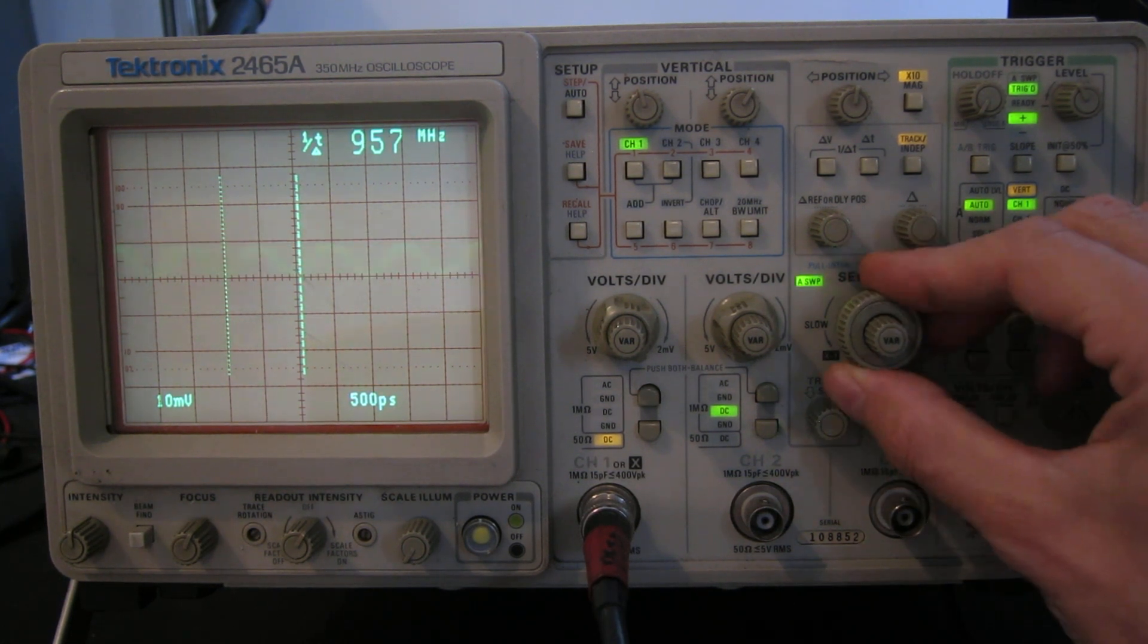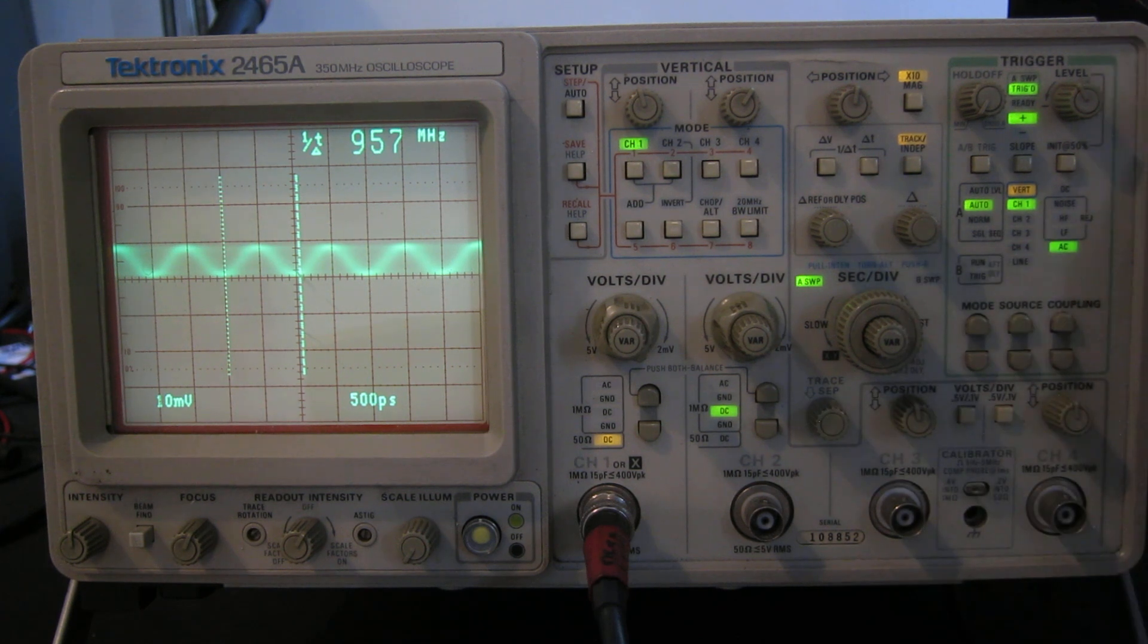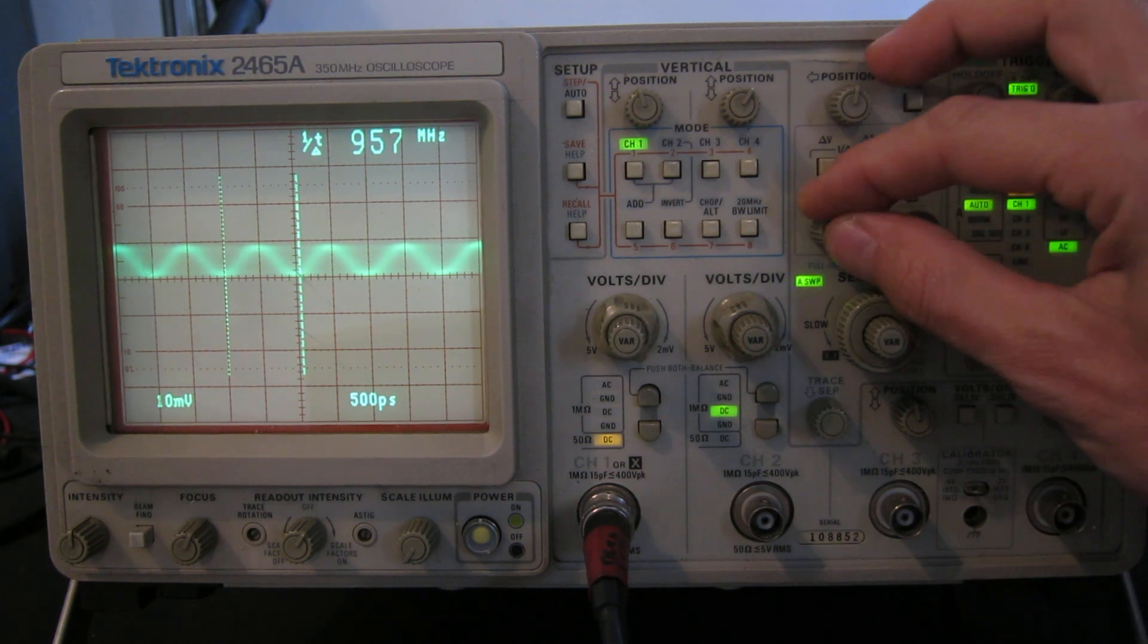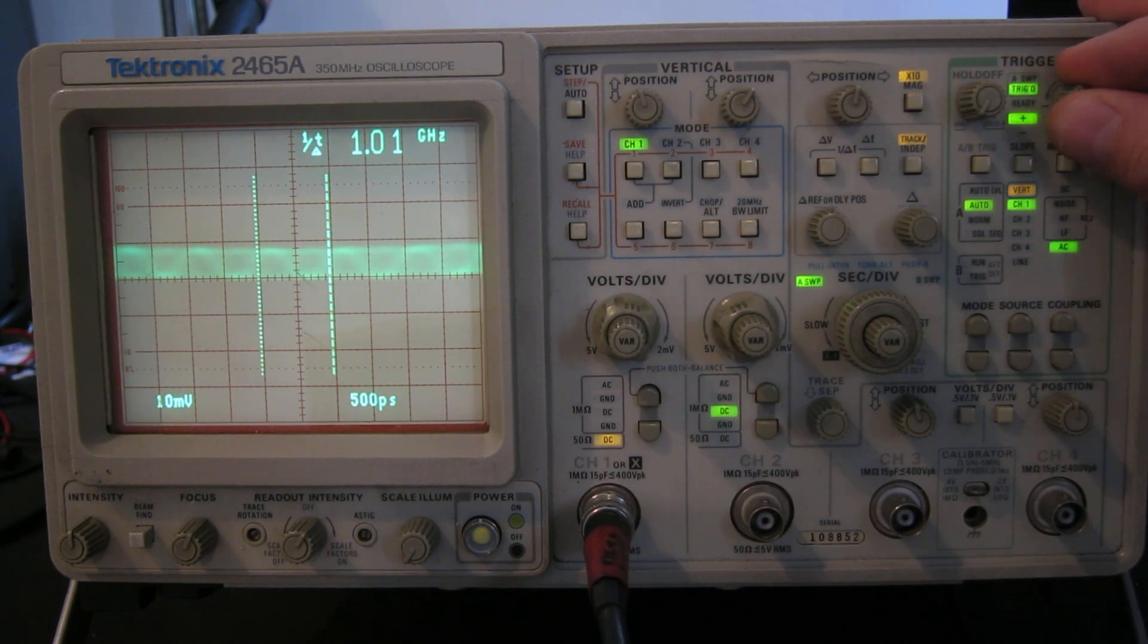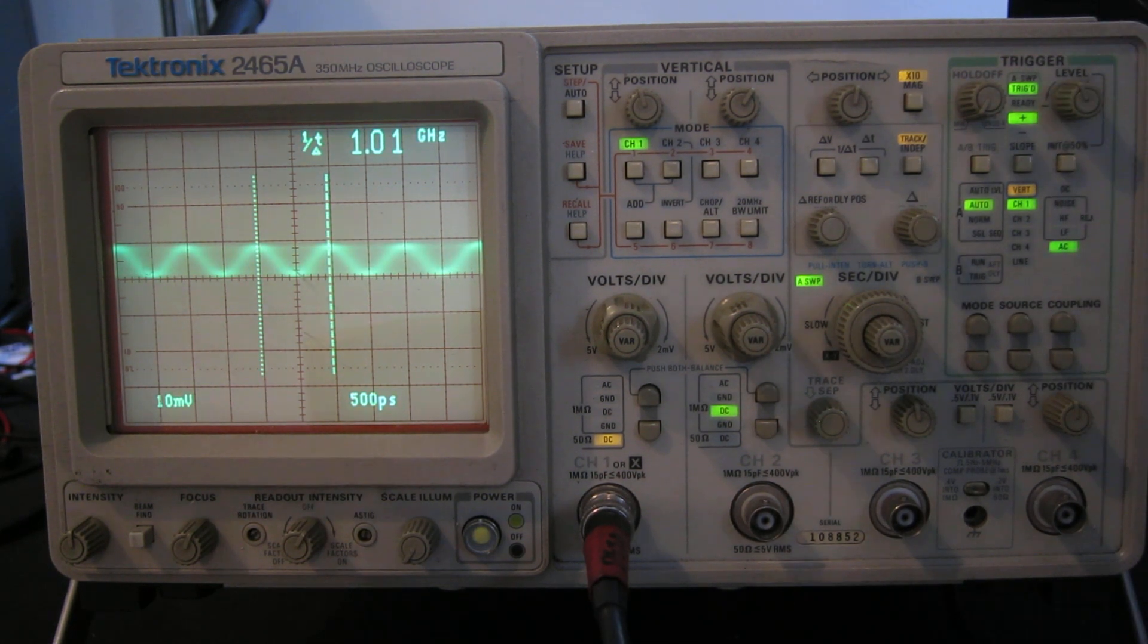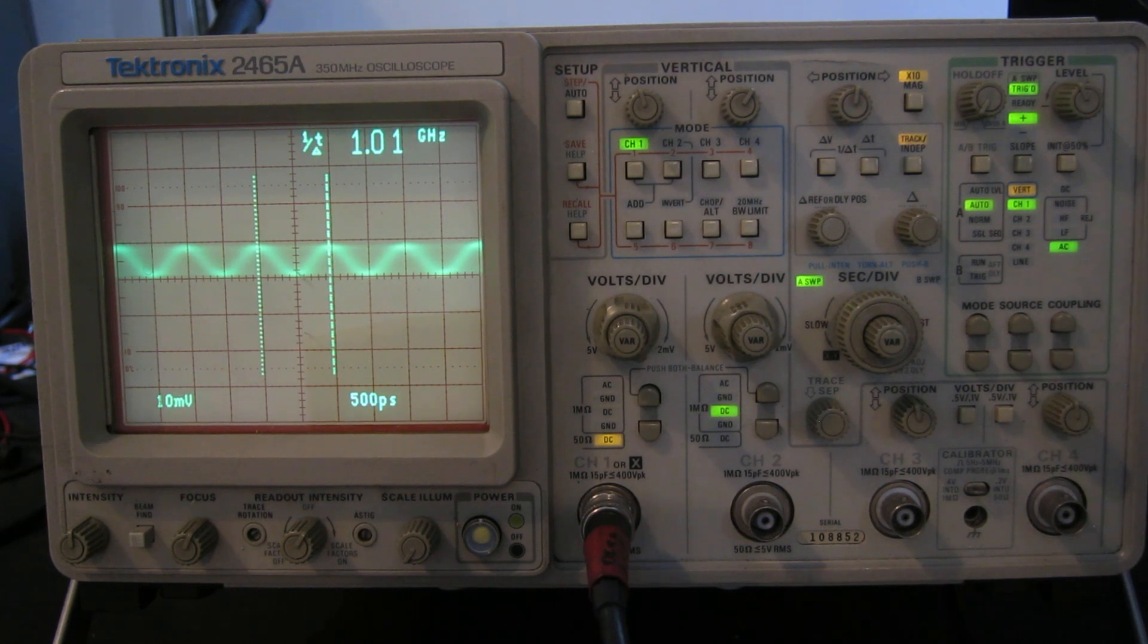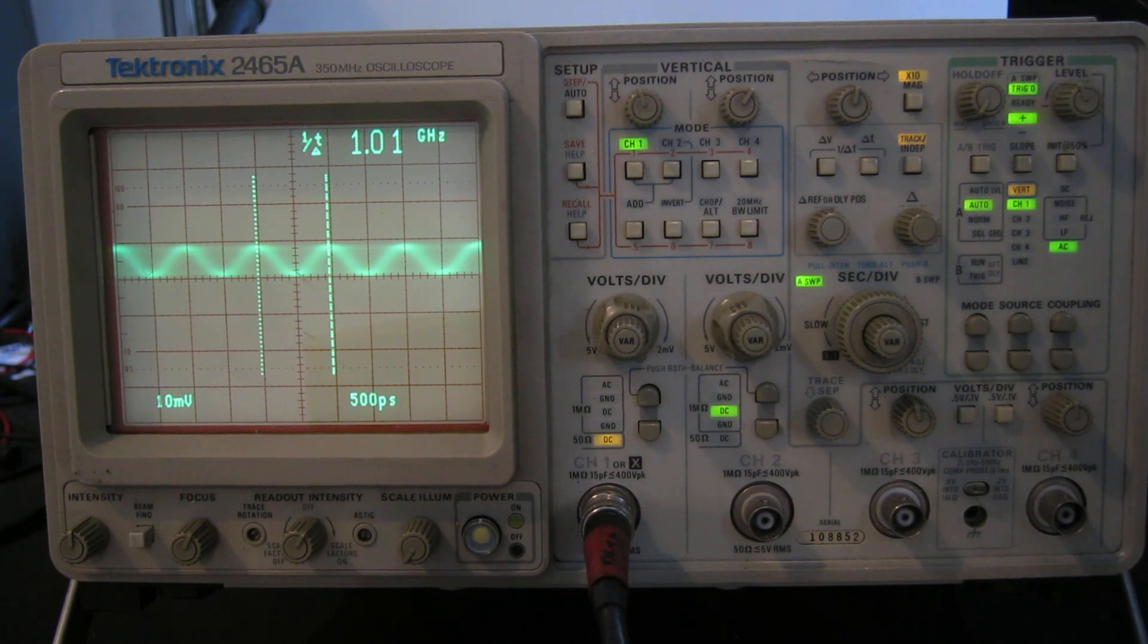That's an actual one gigahertz signal. It's as fast as the scope will run. And there you go. It even displays it properly. Just about, we still have a stable trace at one gigahertz, which is pretty much three times the scope's rated bandwidth. And they knew how to build them in those days. So there you go. That's the Tektronix 2465A scope in good working order. And I hope you enjoyed watching. Thanks.